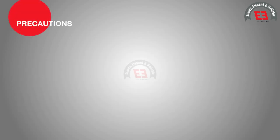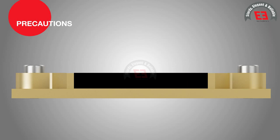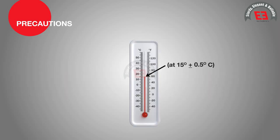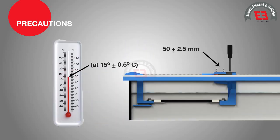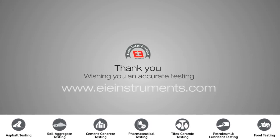Precautions. The test temperature and pouring temperature should be strictly adhered to. The minimum width at the cross section of the sample should be 10 mm by 10 mm. The test temperature of 15 degrees Celsius plus or minus 0.5 degrees Celsius and rate of pulling of 50 mm per minute plus or minus 2.5 mm per minute should be maintained as per requirement. Thank you. Wishing you accurate testing. Please visit us at www.eieinstruments.com.